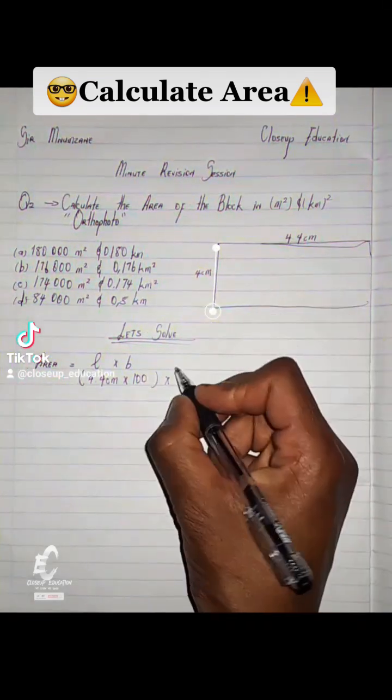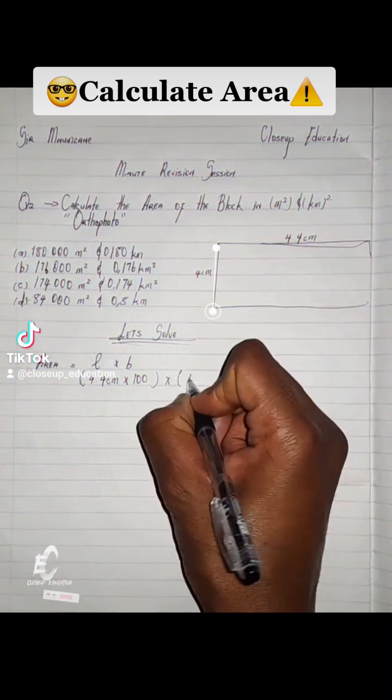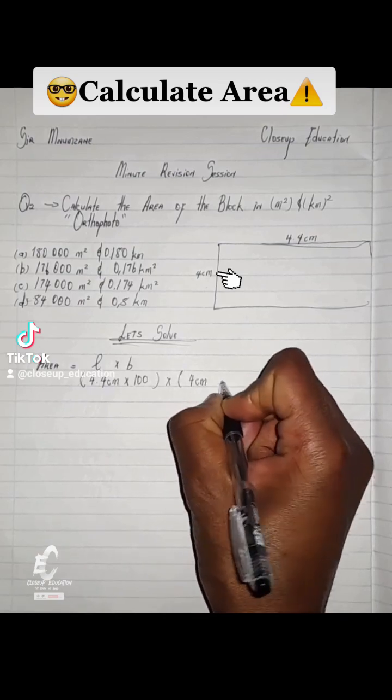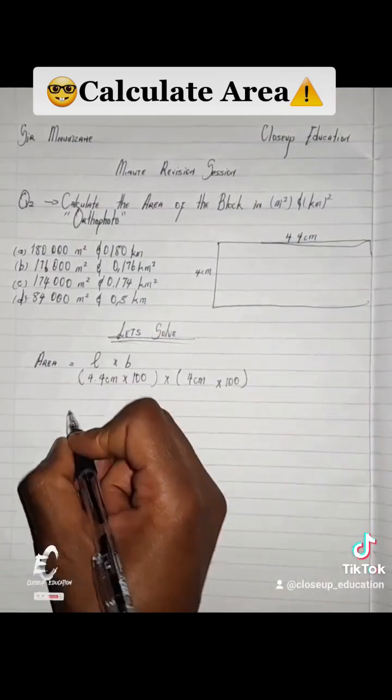Multiply our breadth. Our breadth is the smallest part, which is 4 cm must multiply by our 100. Close bracket.